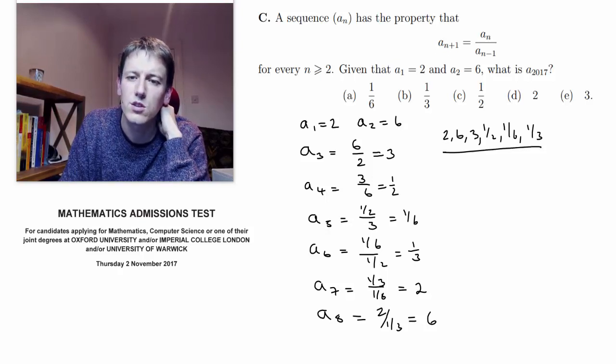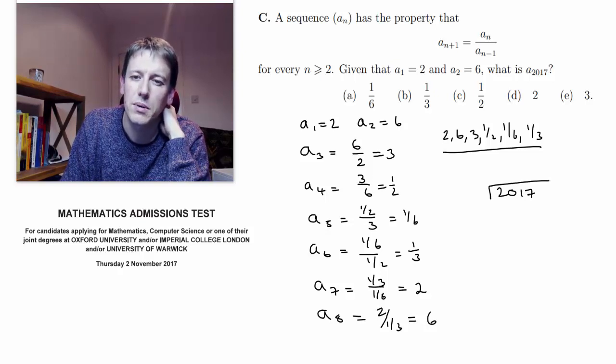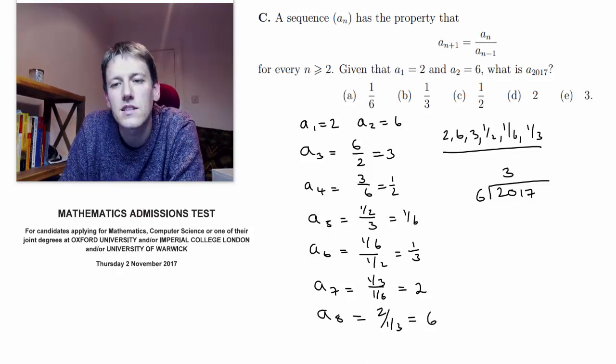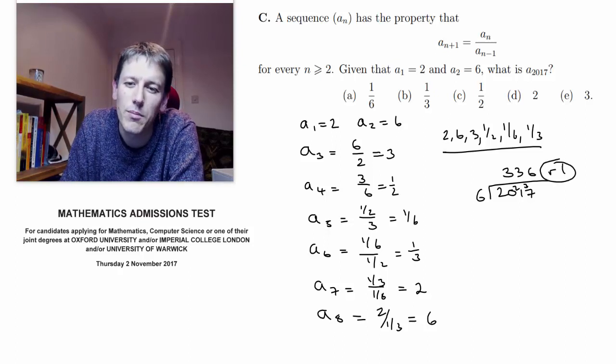Now we want the 2017th term, I guess because it was the year 2017. We've got a period of 6 here. If I divide 2017 by 6, I get 336 remainder 1. The remainder 1 is what I really care about,